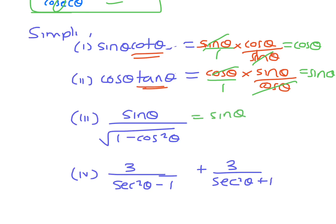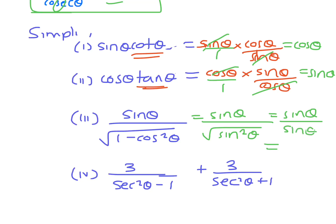The next one: sine θ over the square root of one minus cos² θ. One minus cos² θ is sine² θ, so the square root of sine² θ is sine θ. Sine θ on sine θ is just one.